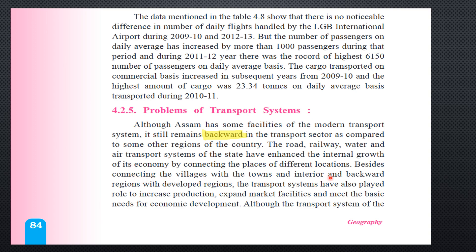Besides connecting villages with towns and interior and backward regions with developed regions, the transport system has also played a role in increasing production, expanding market facilities, and meeting the basic needs of economic development. Transportation connects villages to towns so that produce from villages can reach towns, and goods from towns can reach villages. People can move easily, and even interior and backward regions can receive goods and develop gradually.